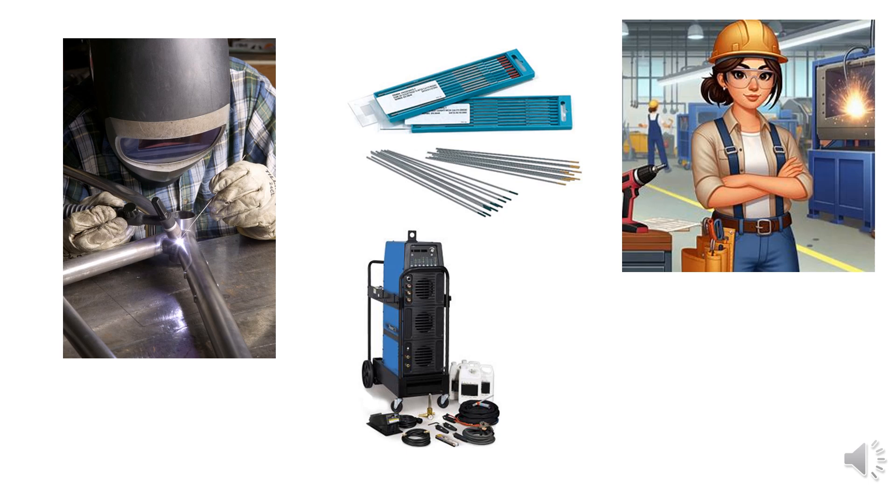Tungsten electrodes are usually color-coded on one end. Green indicates pure tungsten, yellow indicates 1% thorium, red indicates 2% thorium, and brown indicates tungsten alloyed with zirconium. To produce high-quality welds with GTAW, you must properly shape the electrode. The general practice is to use a pointed electrode for direct current welding and a spherical end for alternating current welding.